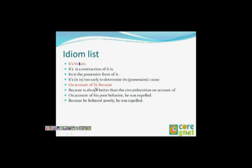It's vs. its: 'it's' with an apostrophe is a contraction of 'it is,' while 'its' without an apostrophe is the possessive form. For example: 'It's too early to determine its cause' — here 'it's' means 'it is,' and 'its' shows possession.